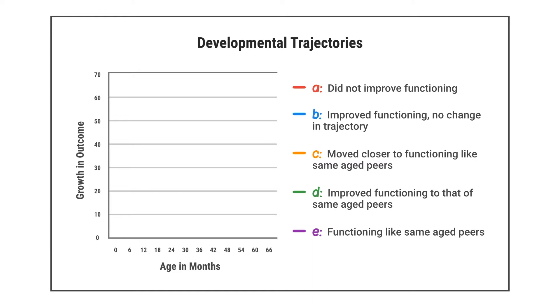Look at the red line in the graph. This illustrates the first reporting category, A, which refers to children who did not show any improvement in functioning between entry and exit. The purple line illustrates typical development and is category E, children who continue to function like same-age peers between entry and exit.